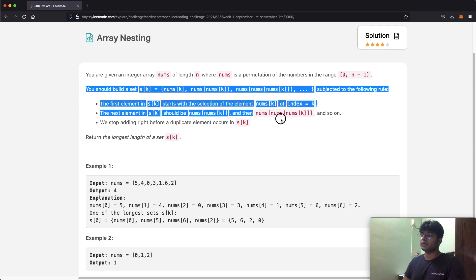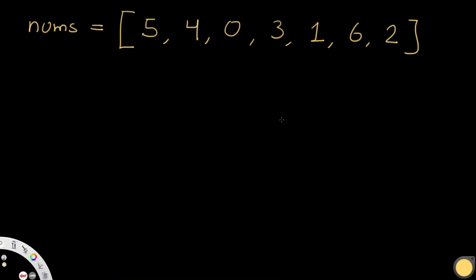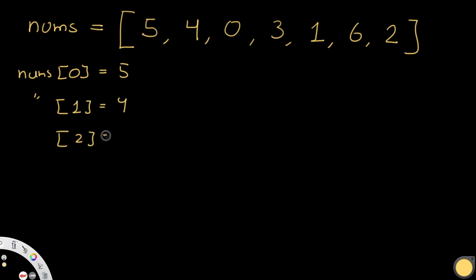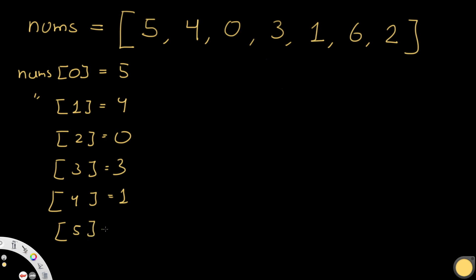The goal is to return the longest length of set S(k). To make it easier, let's write out the index-to-value mapping. Nums at index 0 has a value of 5, at index 1 a value of 4, at index 2 a value of 0, at index 3 a value of 3, at index 4 a value of 1, at index 5 a value of 6, and at index 6 a value of 2.